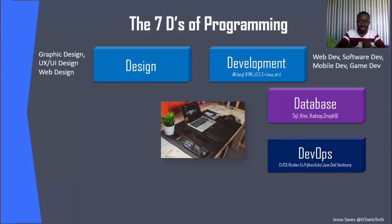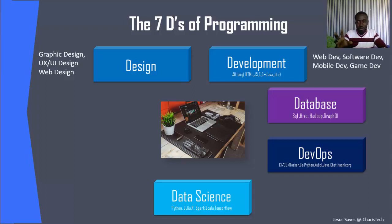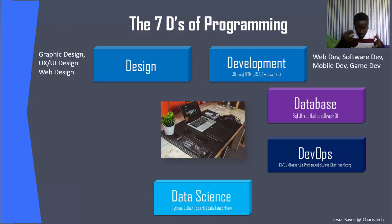The fifth D is Data Science — the favorite for many people. It's a very broad field. Once you have data stored and administered, how do you derive insight from it? Data science covers three areas: descriptive analytics, which derives insight from your data; predictive analytics, where you build models using machine learning, AI, NLP, and computer vision; and prescriptive analytics.